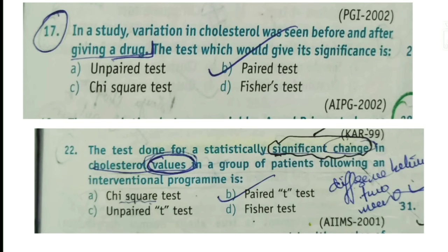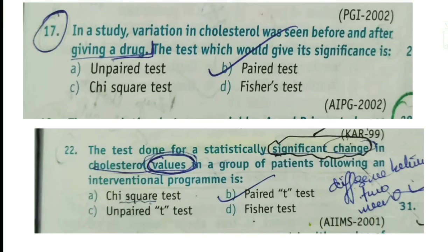Now let's look at MCQs. Question 17: 'In a study, variation in cholesterol was seen before and after giving a drug. The test which would give its significance is?' The answer is paired t-test, because variation in cholesterol is measured before and after giving a drug — on two occasions for the same group — so we use the paired t-test.